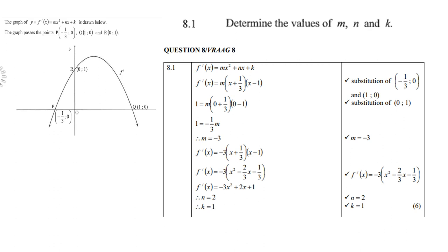Then you reintroduce m equals negative three into the equation, and you remove all your brackets, and you get your answer: negative three x squared plus two x plus one. Therefore, n is two and k is one.